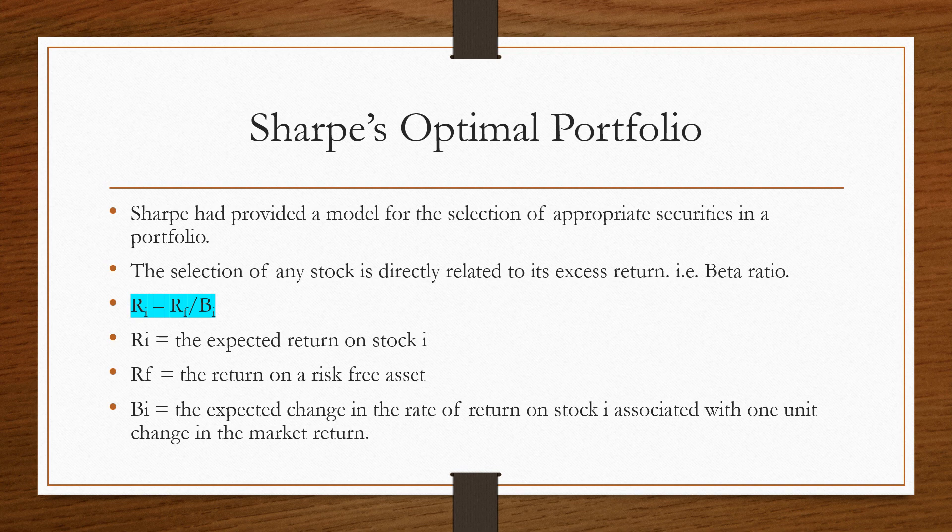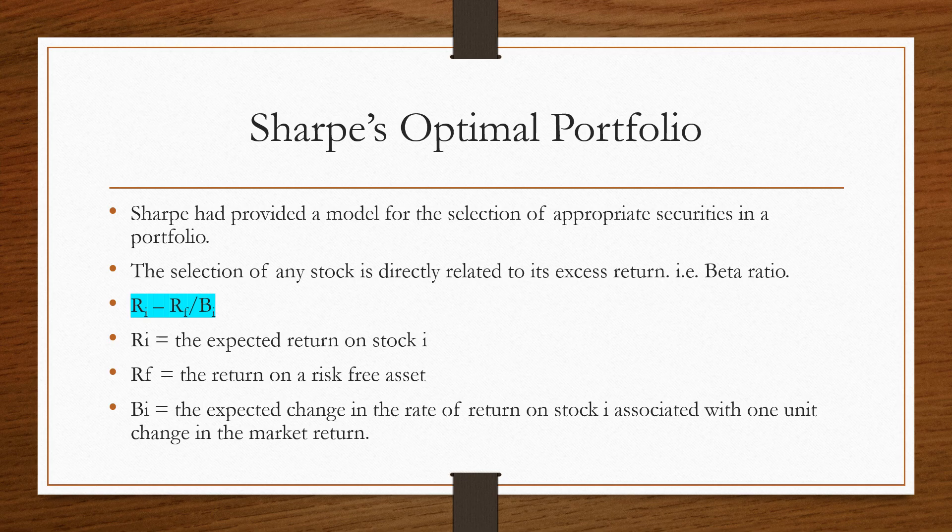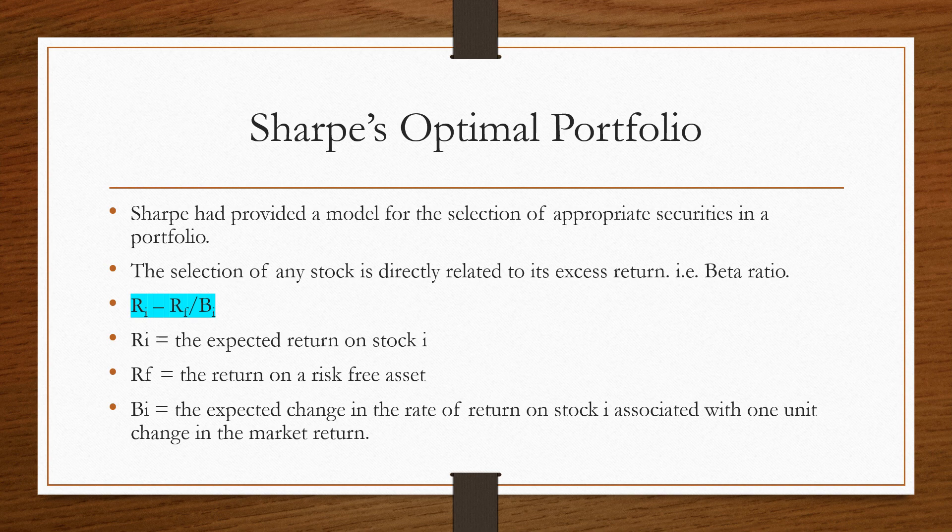Excess return is denoted with beta ratio. He has given the formula for selecting the optimal portfolio: Ri minus Rf upon beta i. Here Ri is the expected return on stock i.